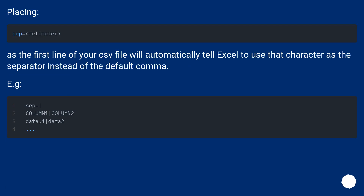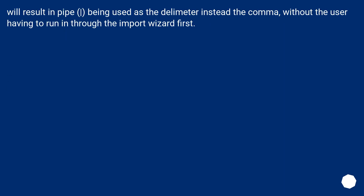Placing 'sep=' as the first line of your CSV file will automatically tell Excel to use that character as the separator instead of the default. For example, using a pipe character will result in the vertical bar being used as the delimiter instead of comma, without the user having to run the file through the import wizard.